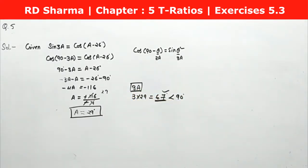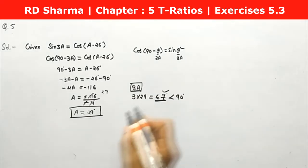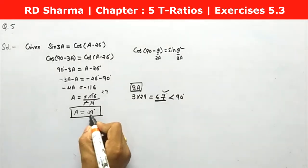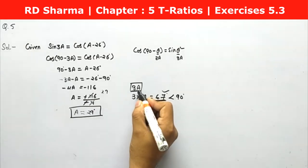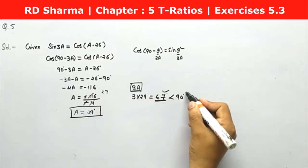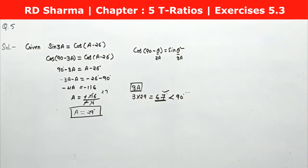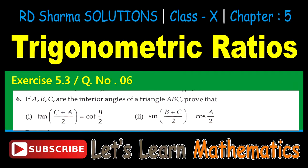Clear question. Now let's solve question number 6. If A, B, C are the interior angles of a triangle, we have to prove two things: first, tan of (C plus A) by 2 equals cot of (B by 2); second, sin of (B plus C) by 2 equals cos of (A by 2).